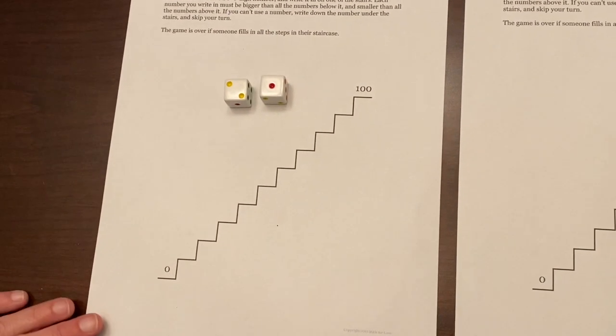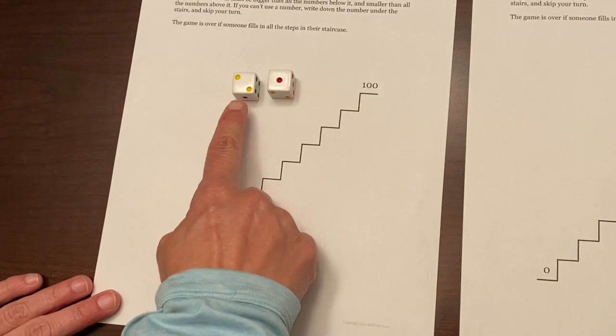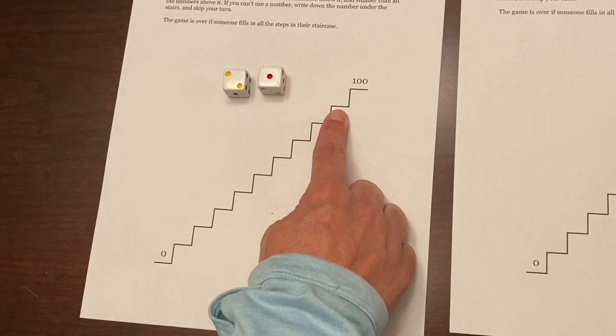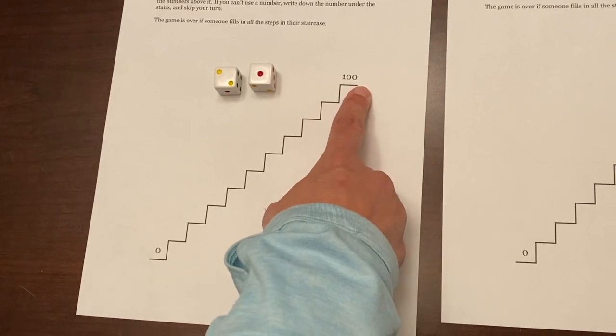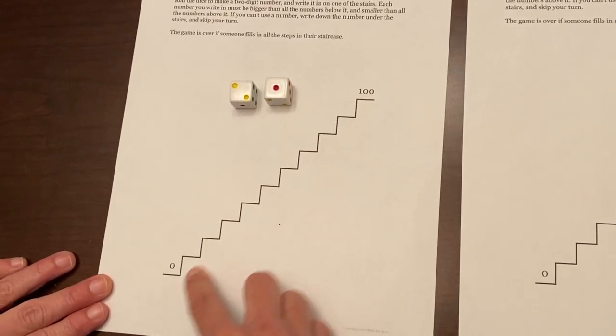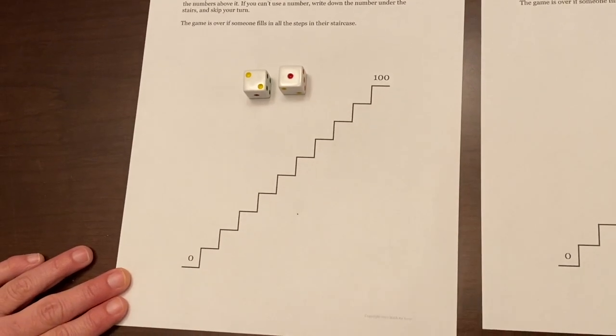Again, strategy. So I could put, let's say I go with 21, I could put 21 up here. It's a legal move because 21 is less than 100. My question is, how would putting 21 here impact the rest of my game? Just some questions to think about and ask your student.